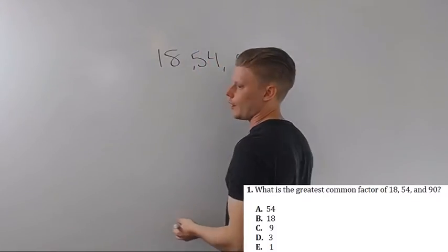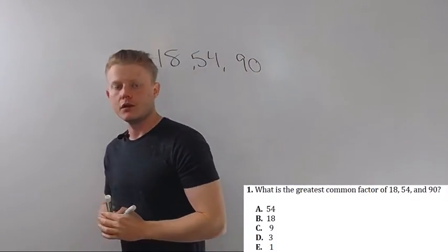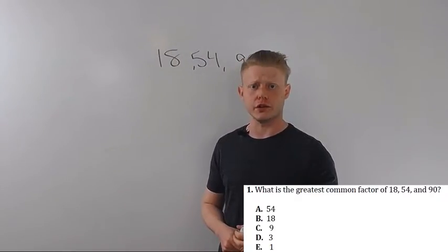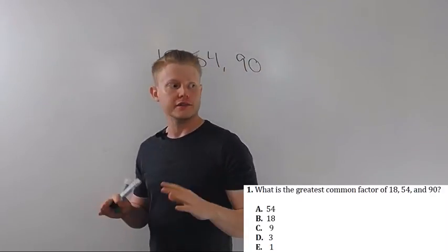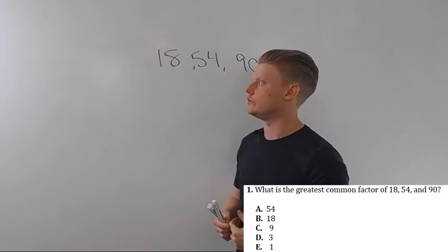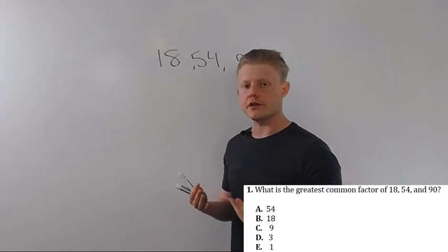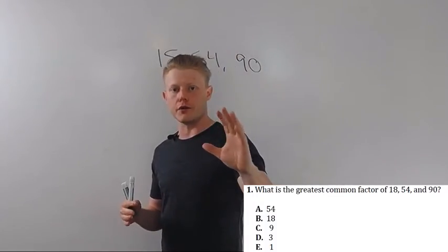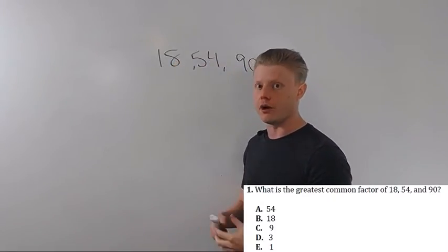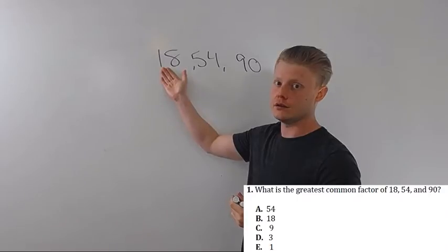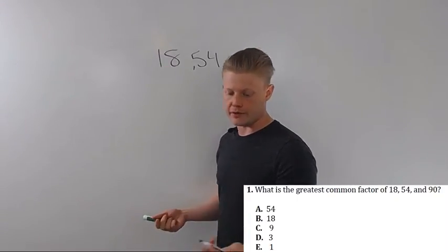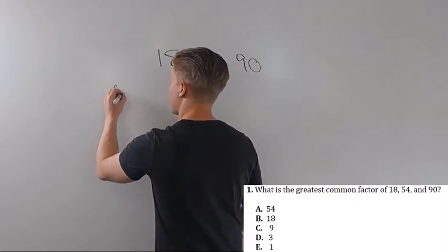Now, we just talked about prime factorization. Would I use prime factorization or another factorization method to find the answer here? Absolutely not. Instead, what I would do is I would use some common sense and the answer choices. Now, remember, the greatest common factor is the biggest number that will divide evenly into all my numbers. So the largest it could ever be is the smallest number, in this case, 18. So I'm going to start there. Now, we have an answer A that's 54, so it's automatically out.